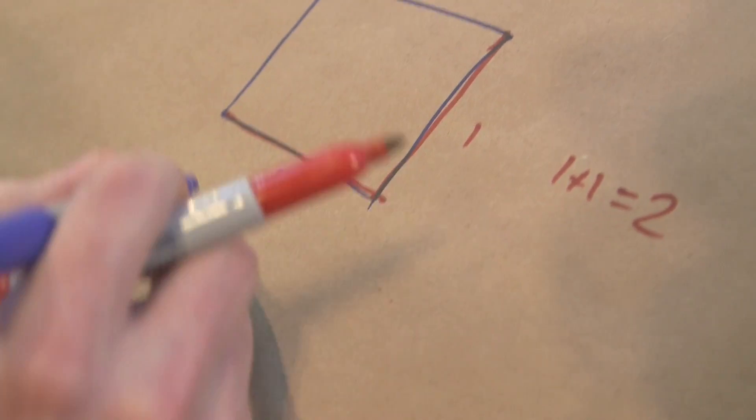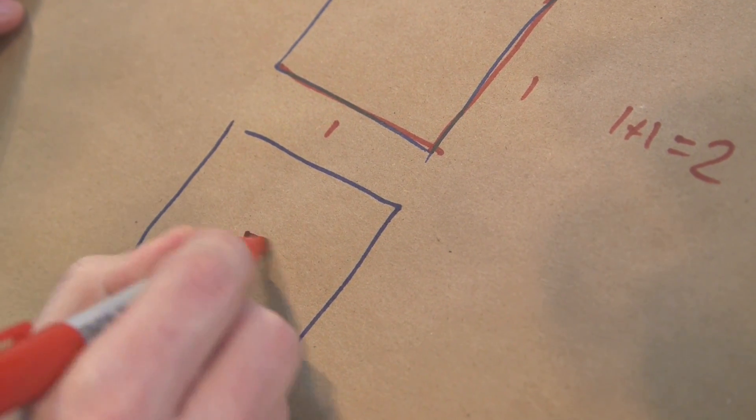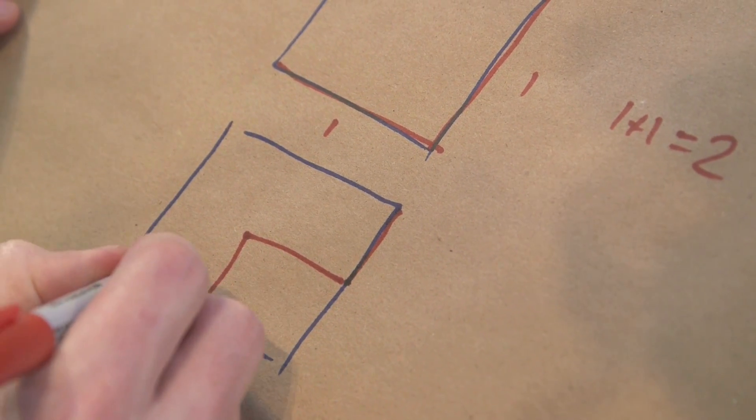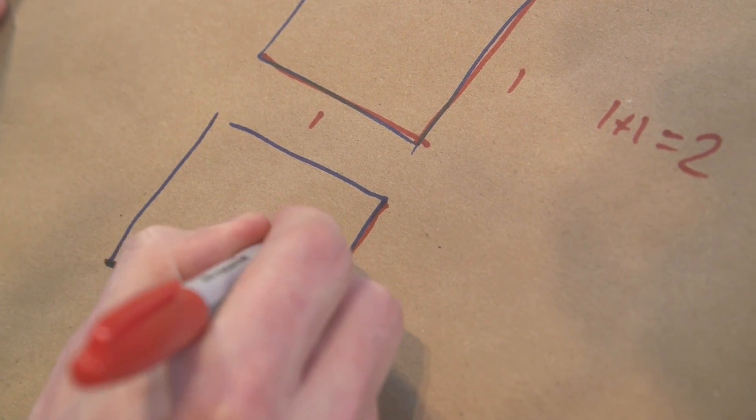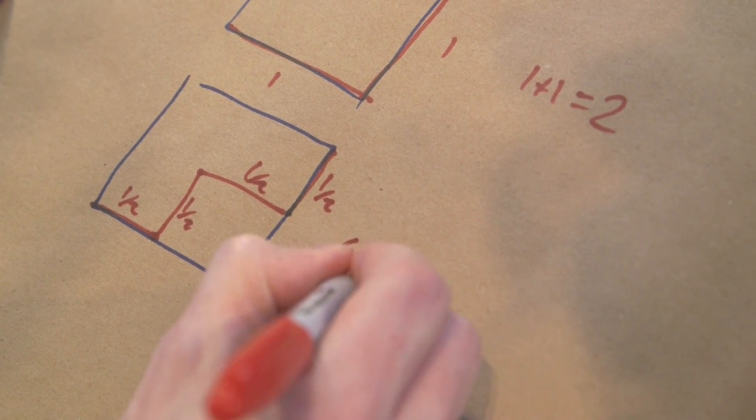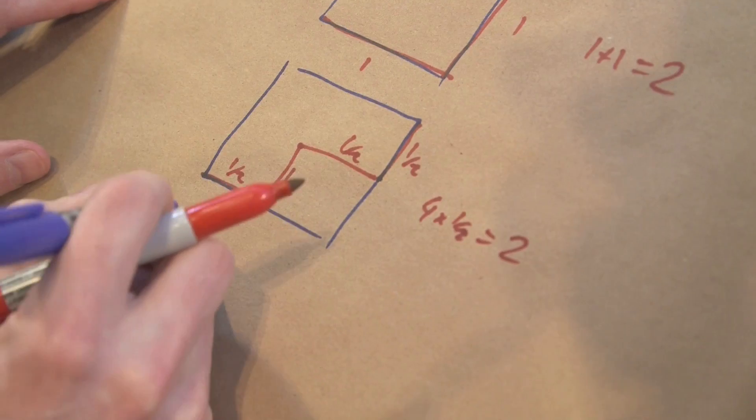So then I'll do the next one. And what I'm going to do is I'm going to go along for a bit, and then I'm going to go up, and then I'm going to go along for a bit, and I'm going to go up. And what's my length? A half plus a half plus a half plus a half. So that's 4 times a half, which is 2. Okay, still 2. Don't worry, I'll get there.